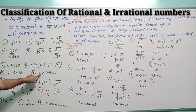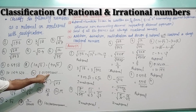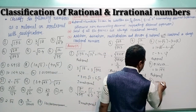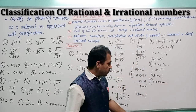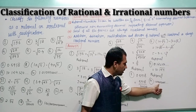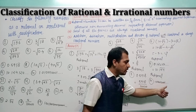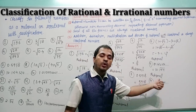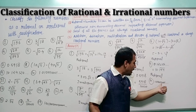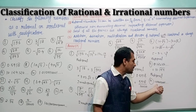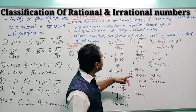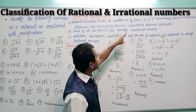Question number 10: 1.010010001... and so on. After the decimal point there is 1, then 0, then 1, then 2 zeros, then 1, then 3 zeros, then 1 — the pattern keeps changing. This is a non-terminating, non-recurring decimal expansion. Non-terminating non-recurring decimal expansion is always irrational.